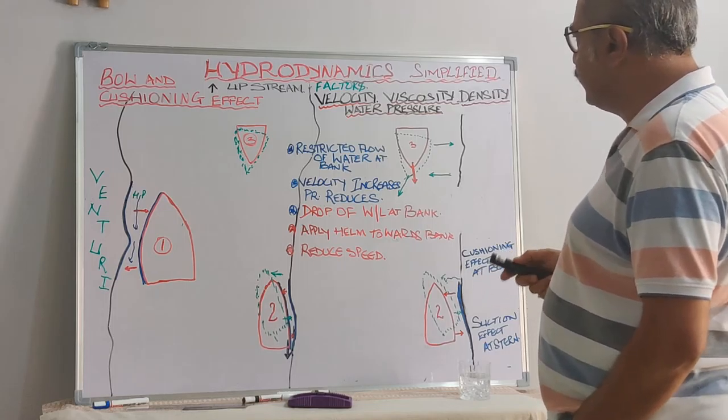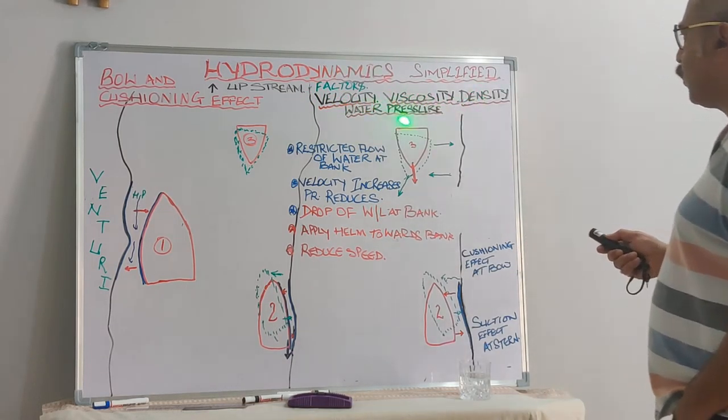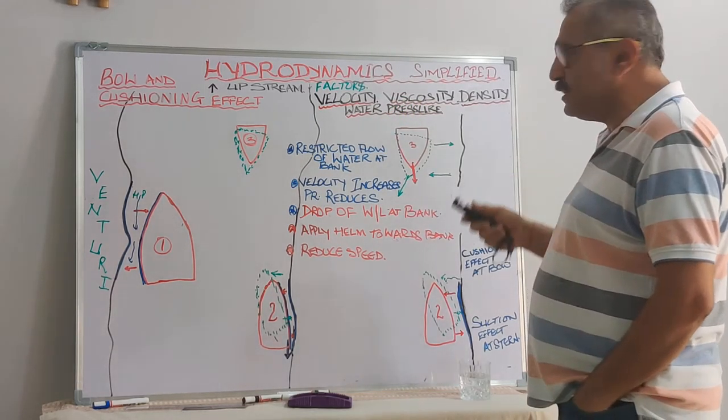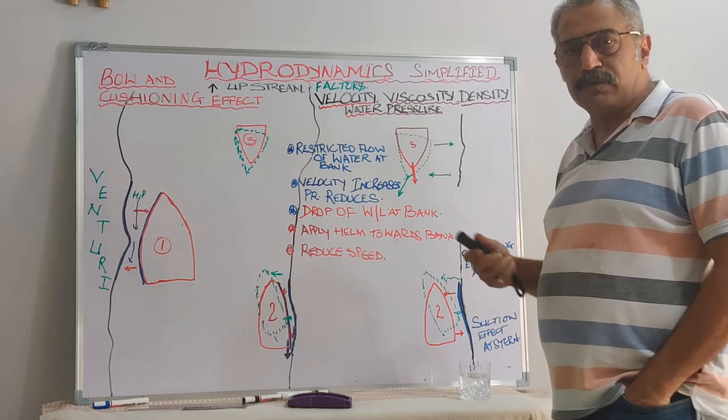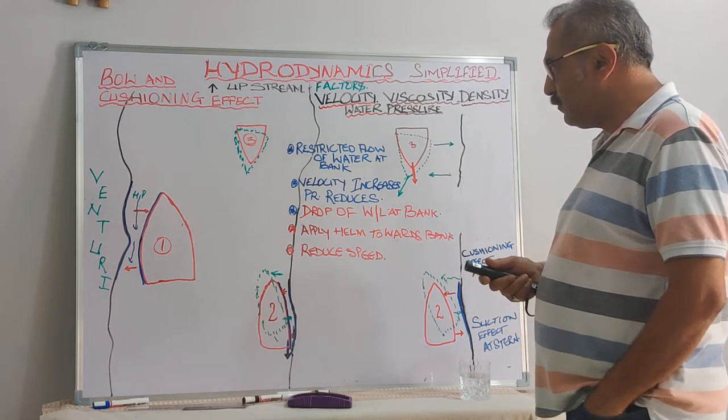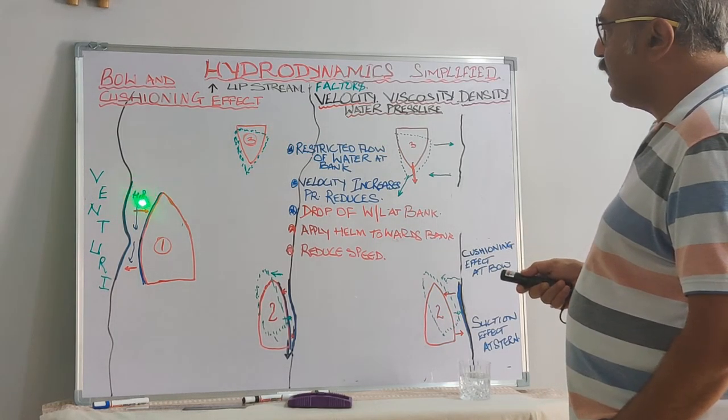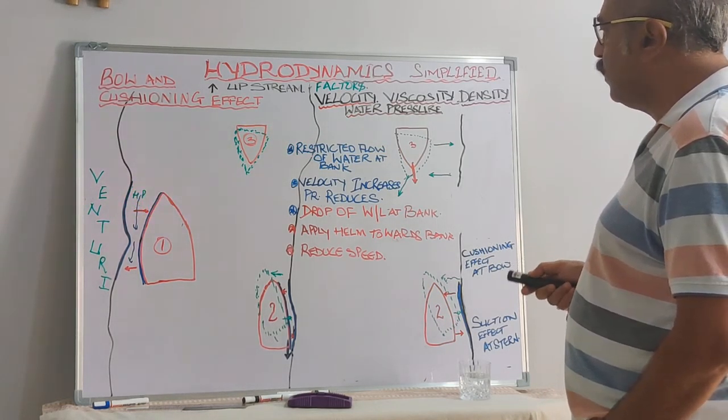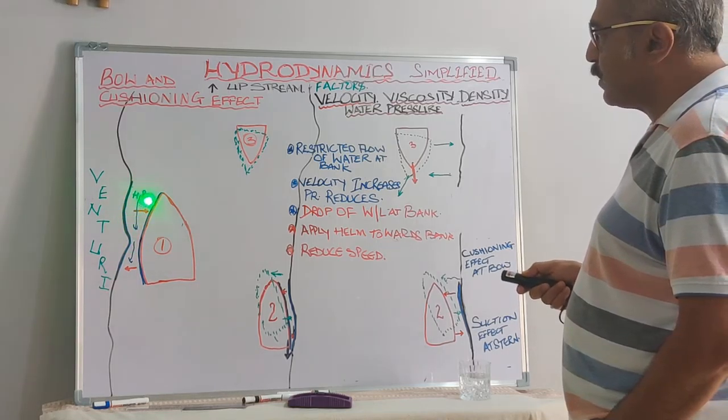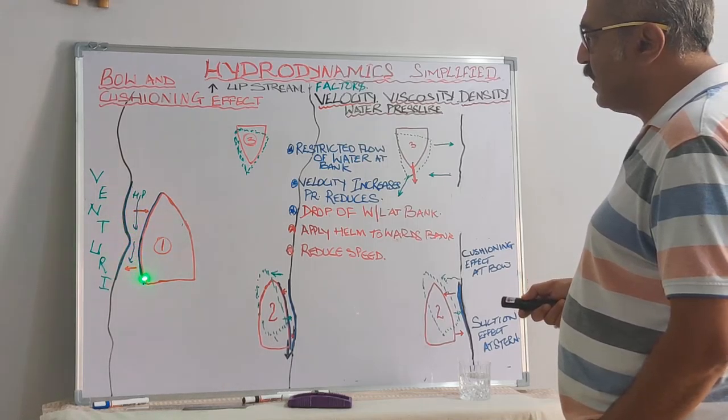Coming to those aspects, of course we do also know the velocity, viscosity, density and water pressure. These are the main ingredients of the squat and the hydrodynamics. What is happening in this particular case: the restricted water flow which is over here. Here the pressure is high, so the water pressure is high, so it's flowing faster. But it is getting constricted somewhere here.